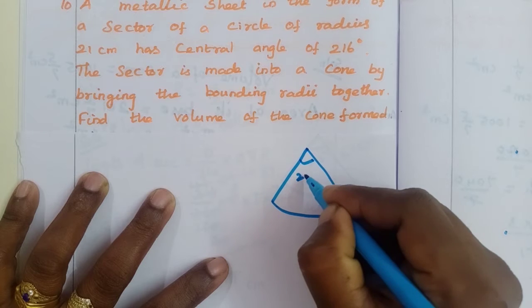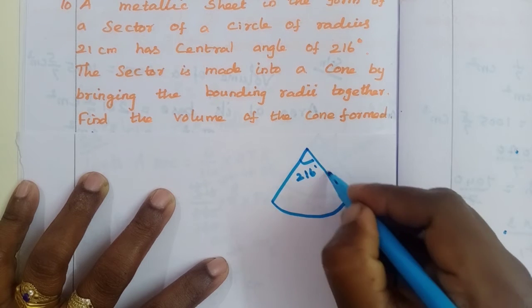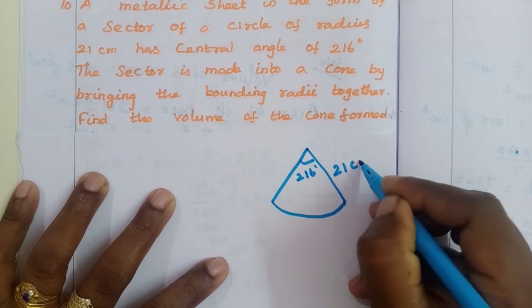So the central angle is 216 degrees, radius of the circle is 21 cm.